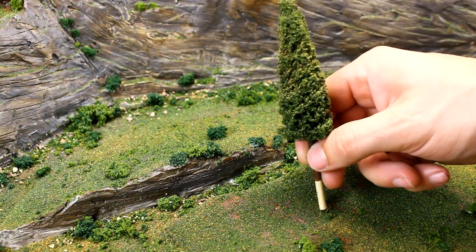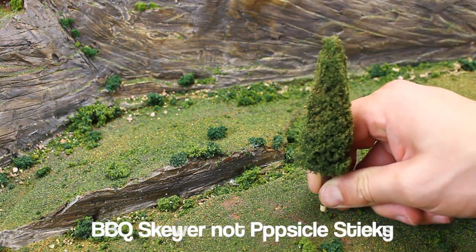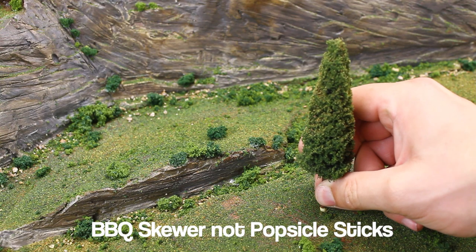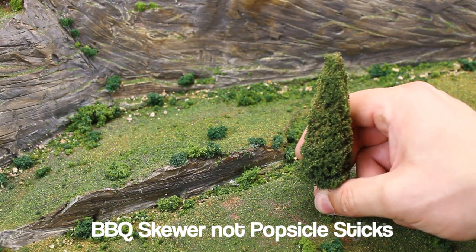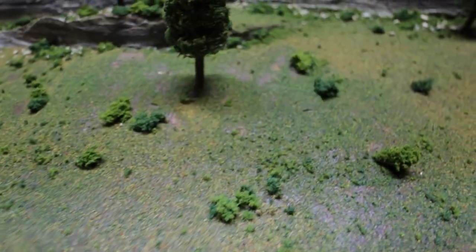Now the trees are pretty straightforward. They're made from popsicle sticks if you've watched that video. I just flip the popsicle stick over and just stab a hole and it fits perfectly. And this is the finished product.